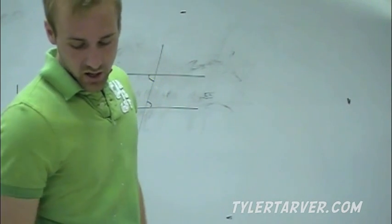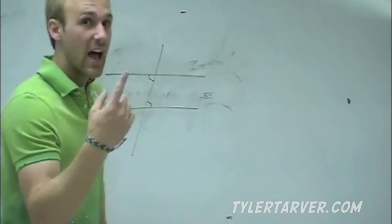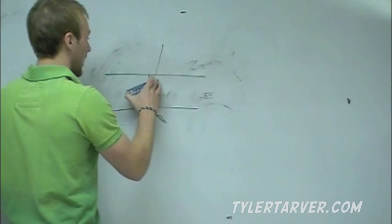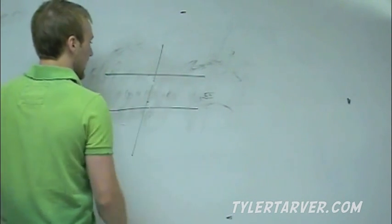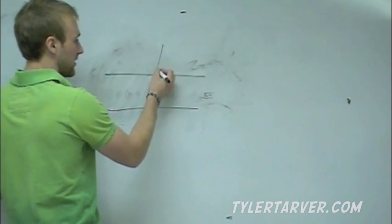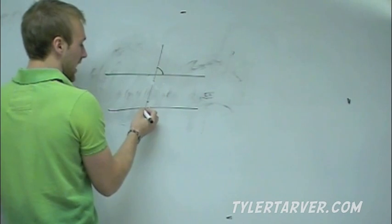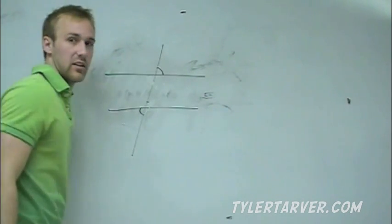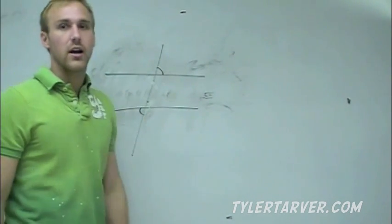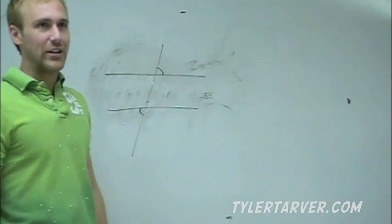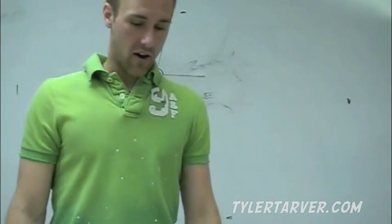Second thing, or the third one now, converse of the alternate exterior angles theorem. Just like we learned last chapter, alternate means they're on different sides of the transversal, and exterior means they're outside the two parallel lines. If those are congruent, guess what? Oh my goodness. They're parallel.